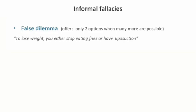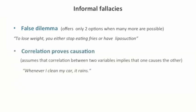Another fallacy example is the correlation-proves-causation fallacy, where an argument assumes that when two events occur together, one causes the other. For instance: 'Whenever I clean my car, it rains.' This is clearly a fallacy, as one does not have any power to make it rain.